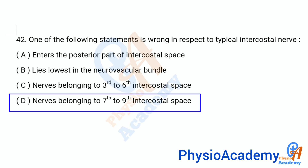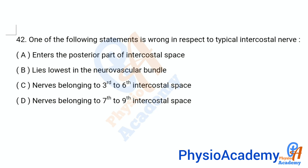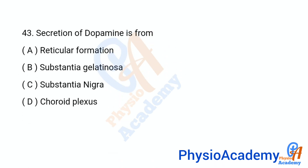Question number 43: Secretion of dopamine is from — option A: reticular formation, option B: substantia gelatinosa, option C: substantia nigra, option D: choroid plexus. The correct answer is option C: substantia nigra.